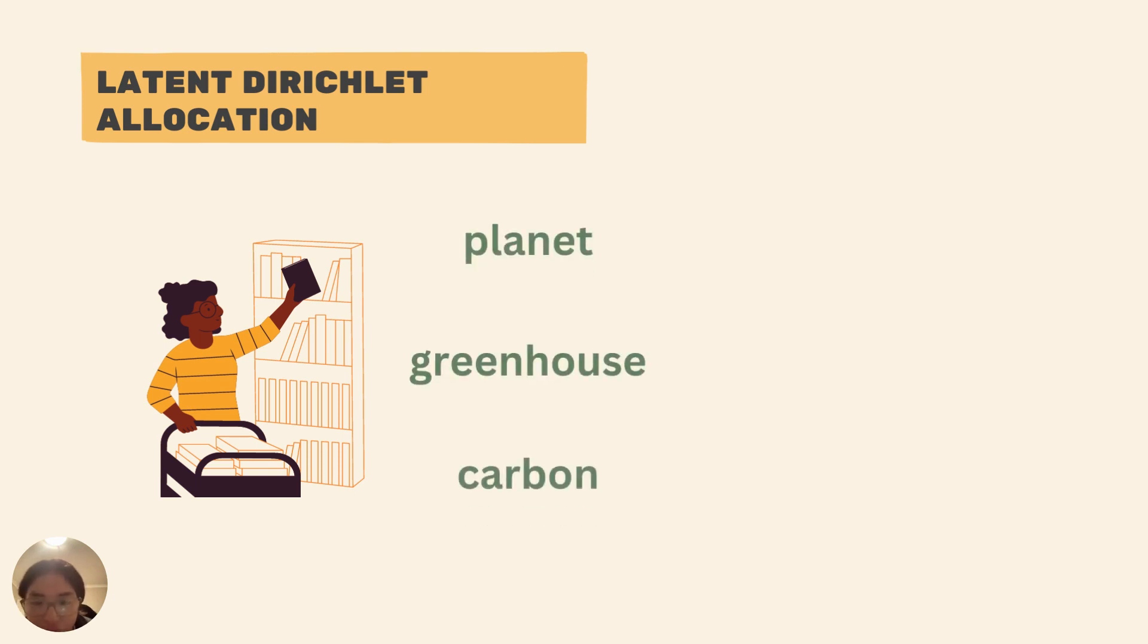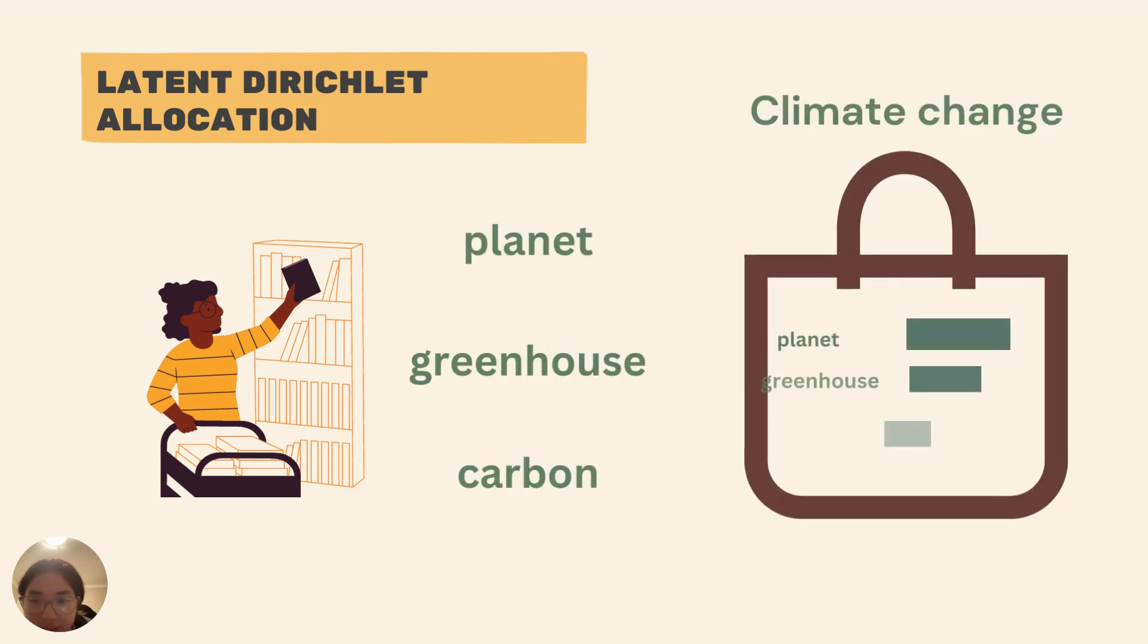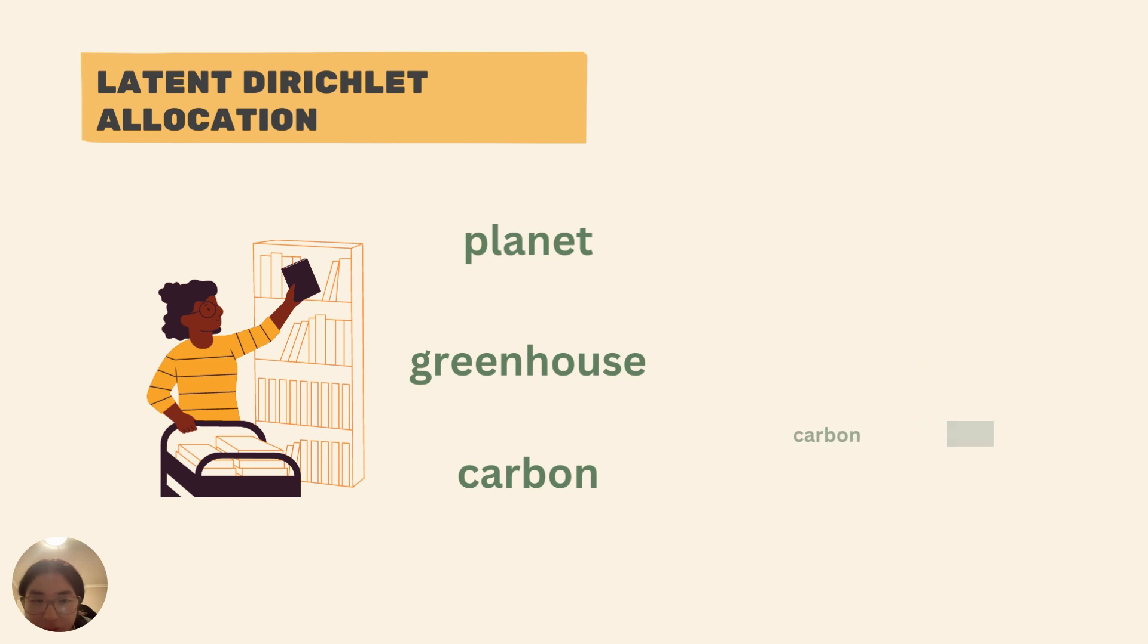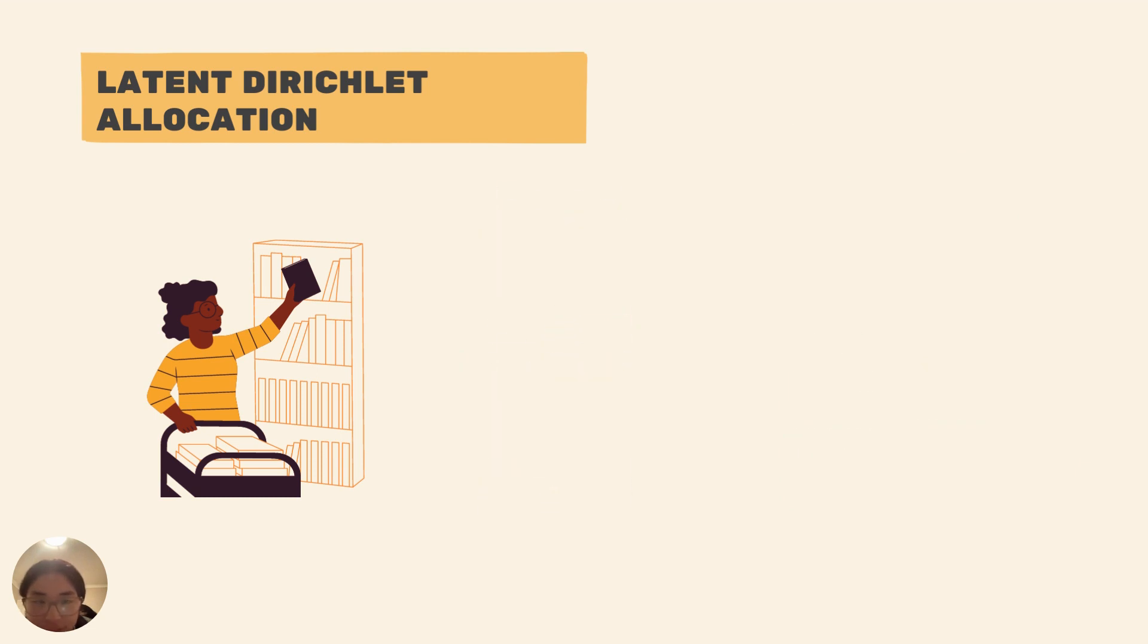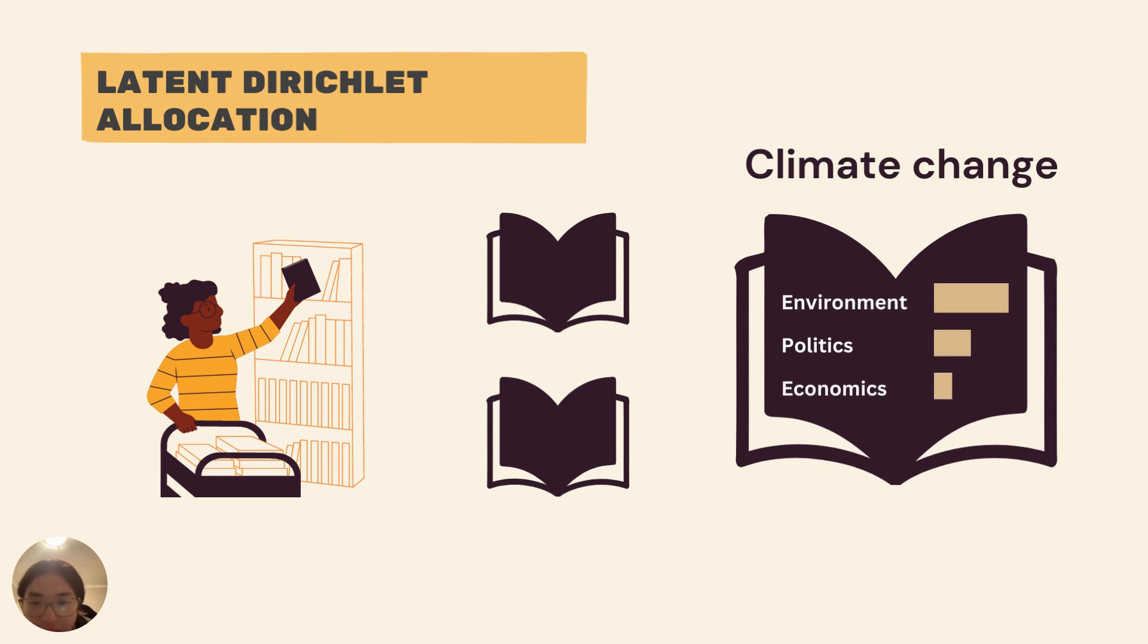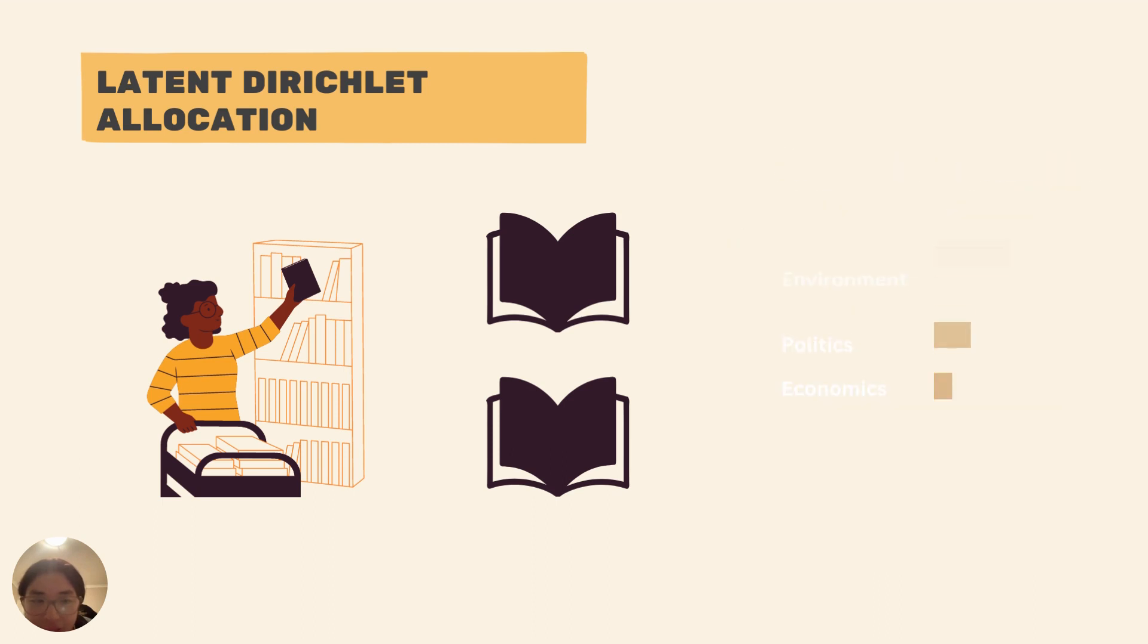greenhouse, carbon into topics, and puts them into a bag of words. Then it assigns a book to a mix of topics based on its content. For instance, a climate change book could be 70% environment, 20% politics, and 10% economics.